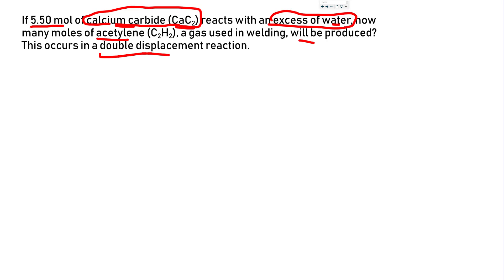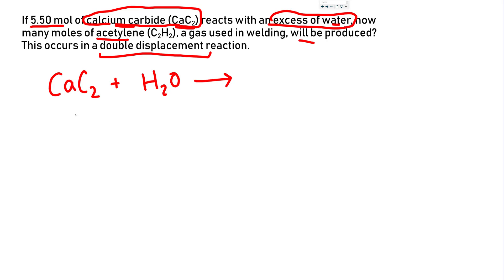This is a double displacement reaction. Let's figure out what the reaction looks like. We write calcium carbide, CaC₂, reacting with water — a double displacement reaction. The Ca and C₂ are going to switch with the water molecule. I like to look at the water molecule so you can separate that H is the positive side and hydroxide is the negative side.